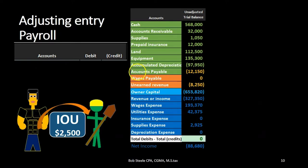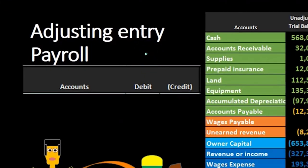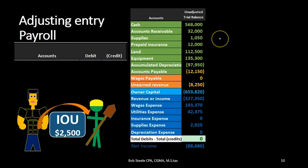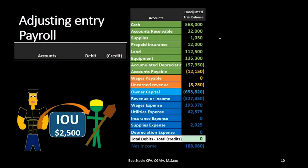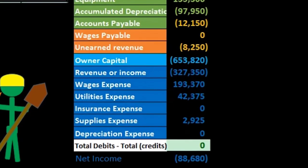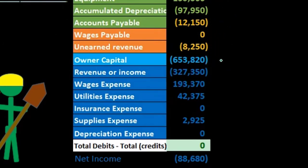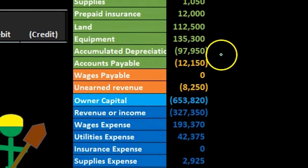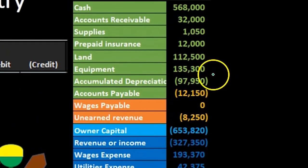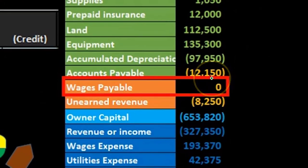With the trial balance, knowing it's an adjusting entry related to payroll, we know at least two accounts will be affected. Because it's an adjusting entry it will be as of the end of the time period — in this case the end of the year, 12/31, when we make the financial statements. There will be one balance sheet account above the equity section and one account below. Looking through the trial balance, we find an account called wages payable — that's probably going to be part of our adjusting process.